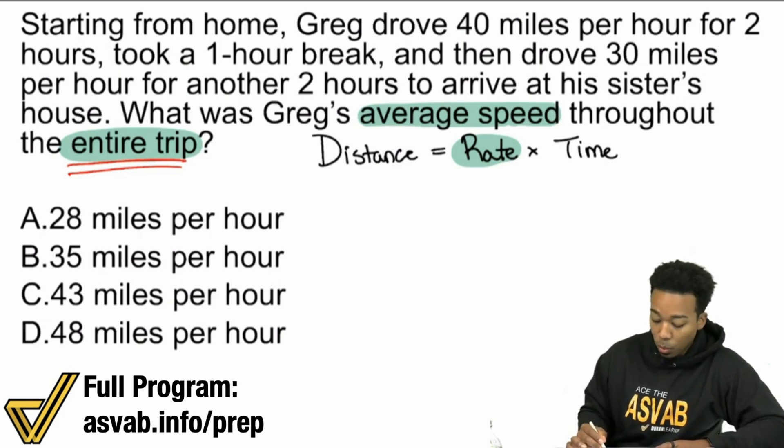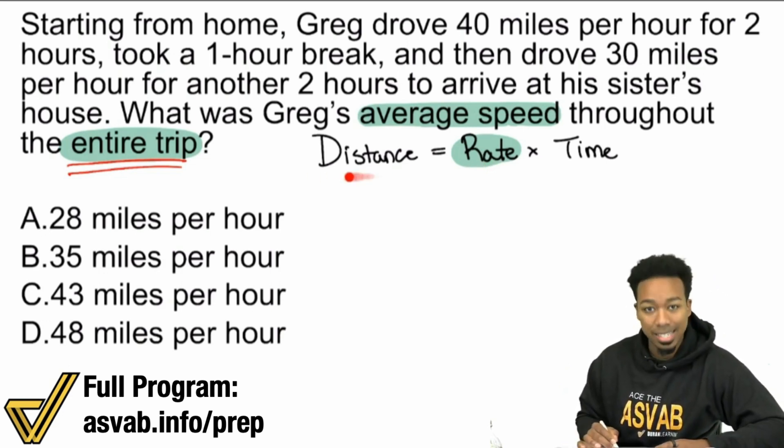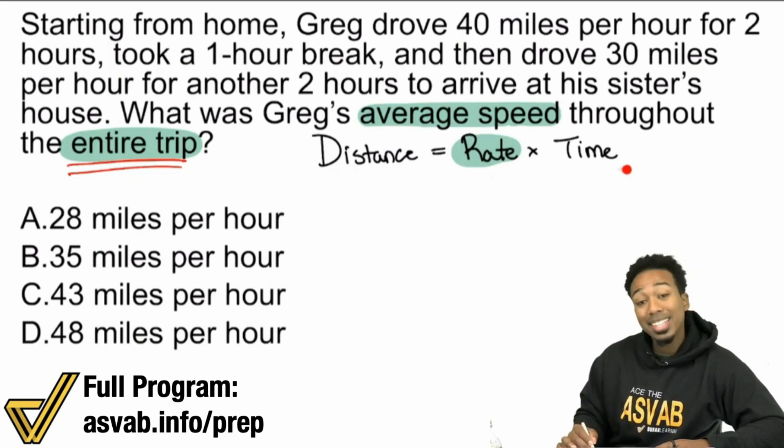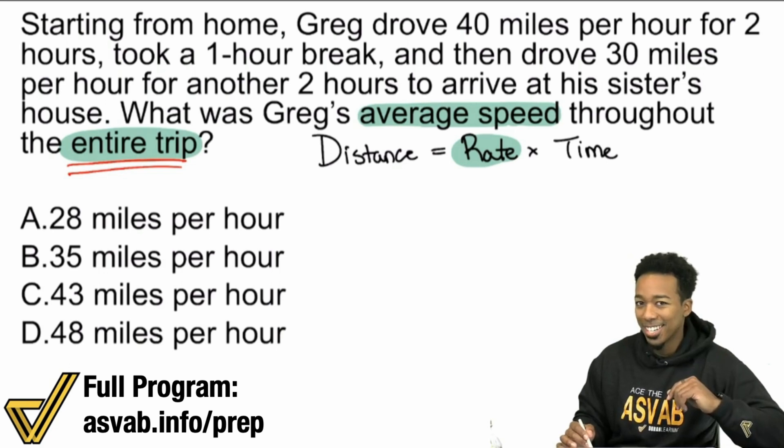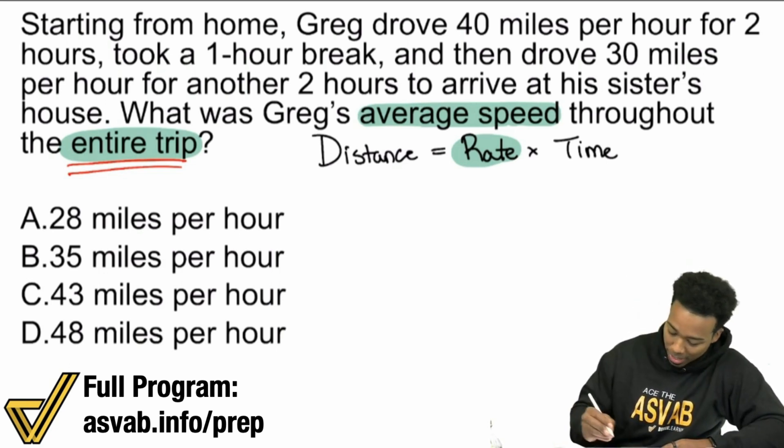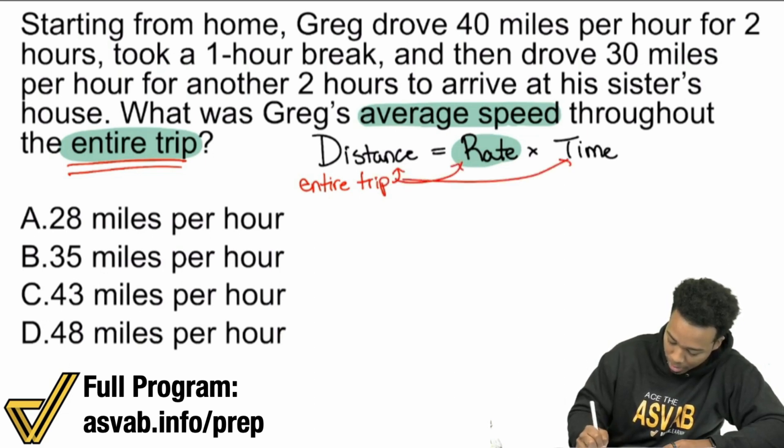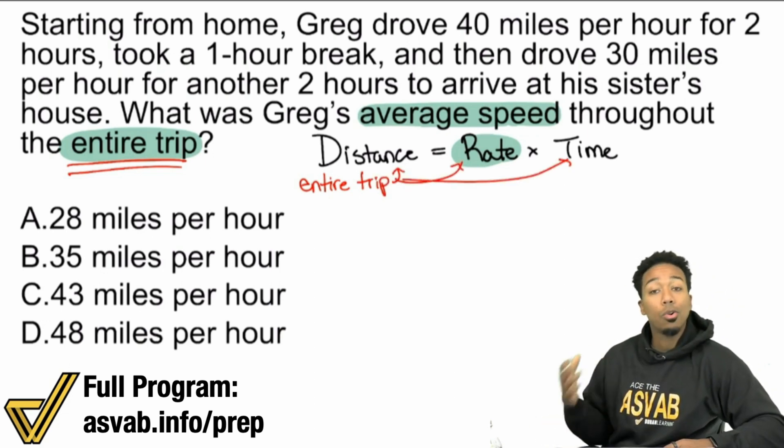So if we want the rate or the speed for the entire trip, we need the distance for the entire trip and the time for the entire trip. Is that starting to make a little bit of sense there? We're going to need the distance for the entire trip, the rate for the entire trip, and the time for the entire trip.